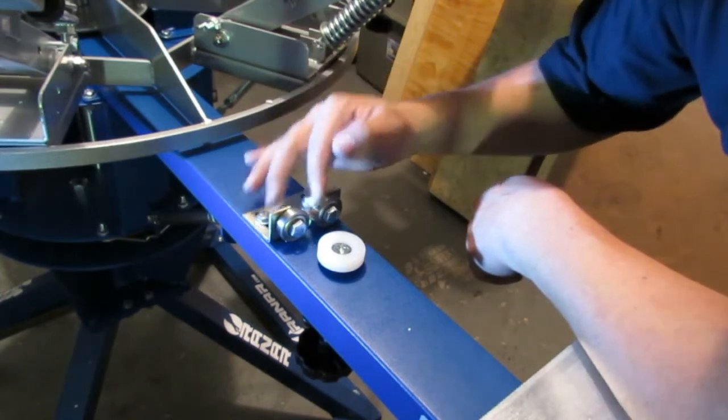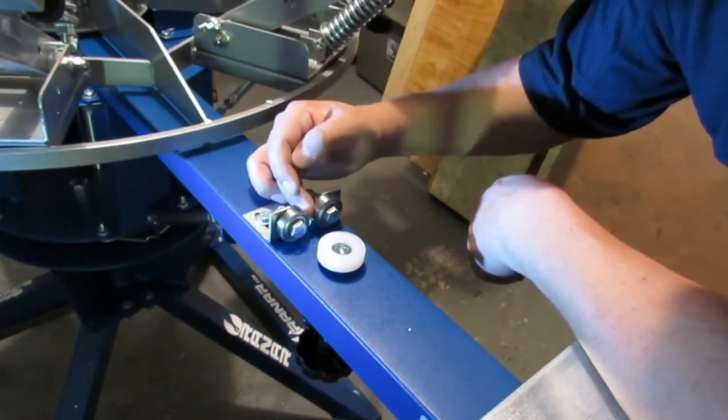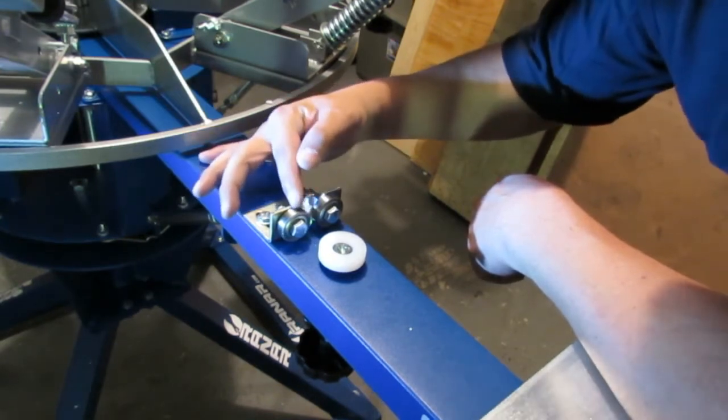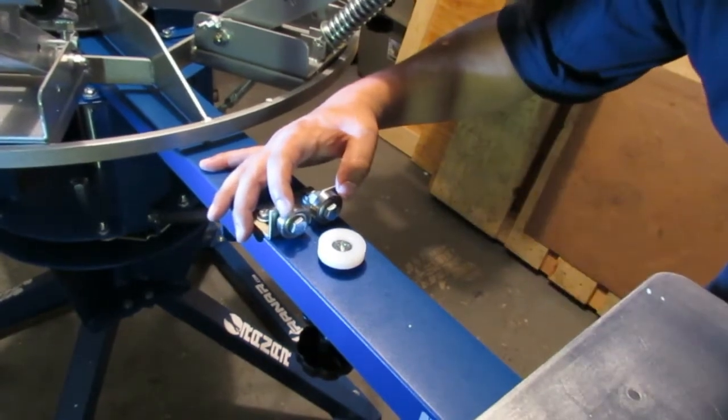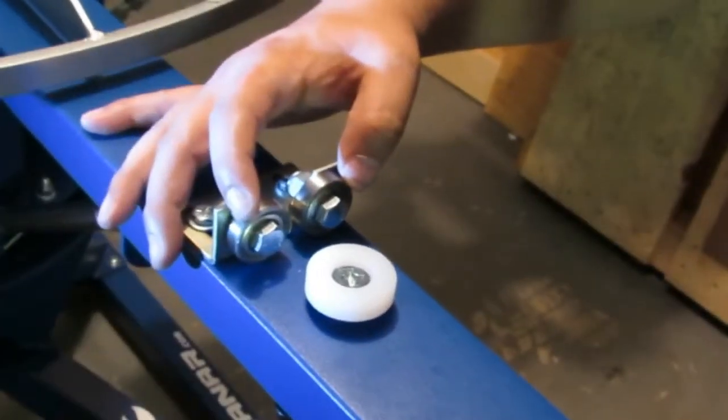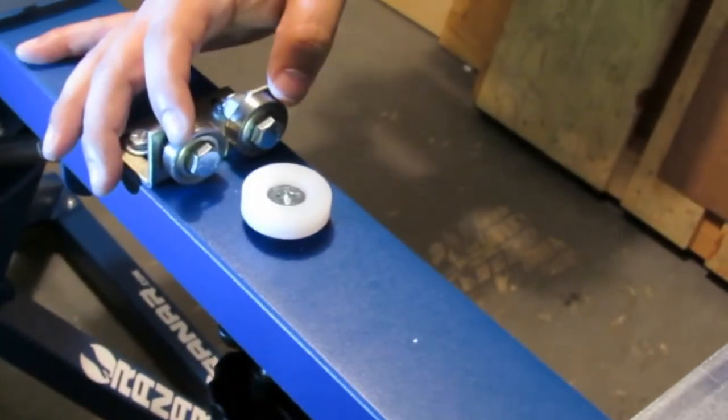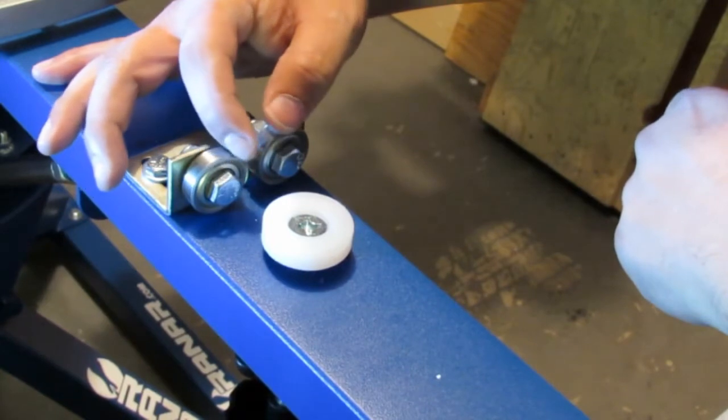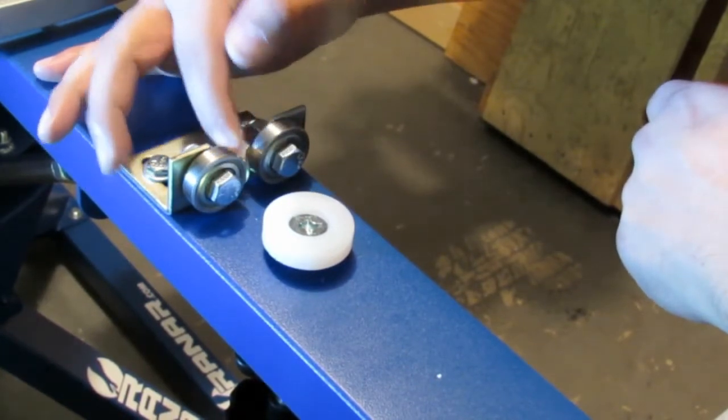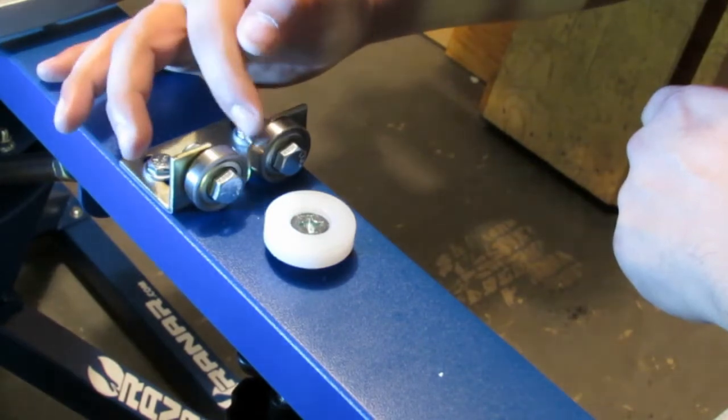Make sure your key engages both bearings. And what that means is that it will move. Okay, so I looked under each one and I was making sure I saw the bearings moving as the key went in between them. That means both of them are engaging.